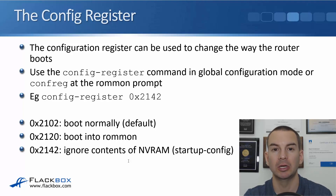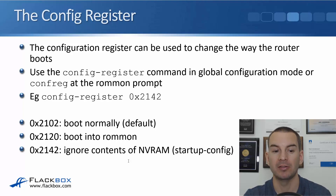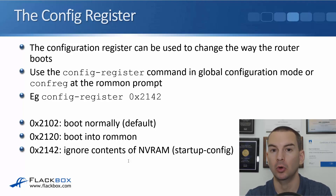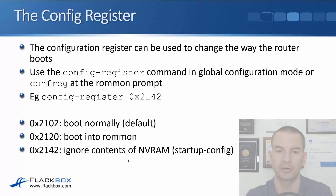There are several different configuration registers you can use — probably three most useful. First is 0x2102, which should be the default; the device will boot normally with that setting. Next, 0x2120 will boot into ROMMON mode. And lastly, 0x2142 will ignore the contents of NVRAM while booting, so it will ignore the startup config. There are other settings that mostly change the baud rate, but these are the three you would commonly use.